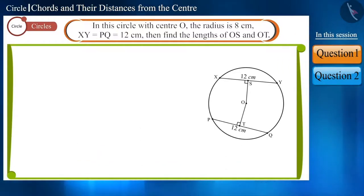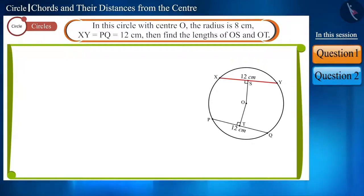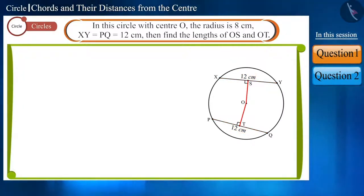In the given figure, the center is O and the radius is 8 cm. The length of the chords XY and PQ is given to be 12 cm. Find the length of OS and OT.